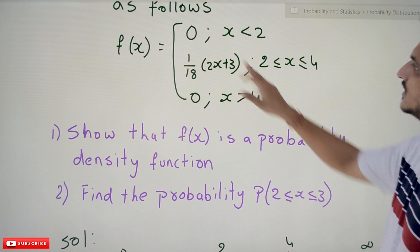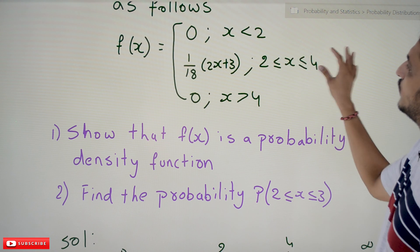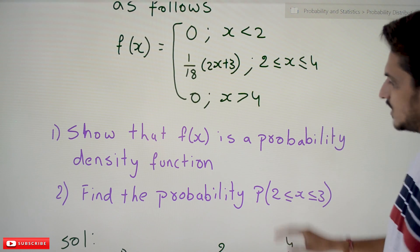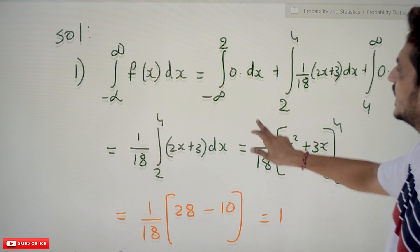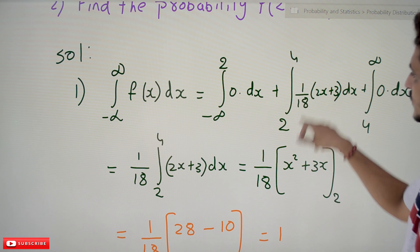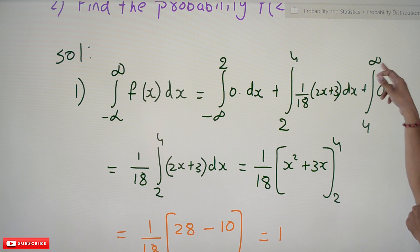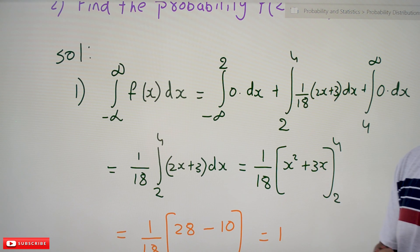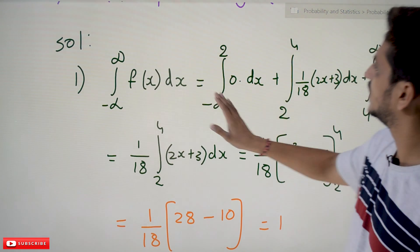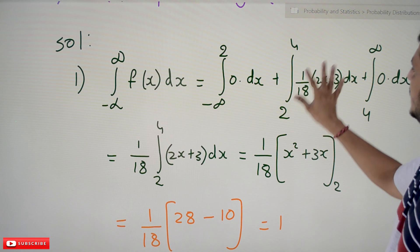The function is given in three parts: it is defined one way for x < 2, another way for 2 to 4, and another for x > 4. So the integral splits as: integral from minus infinity to 2 of 0 dx, plus integral from 2 to 4 of (1/18)(2x + 3) dx, plus integral from 4 to infinity of 0 dx. The zero terms vanish, so we only need to integrate the middle part.